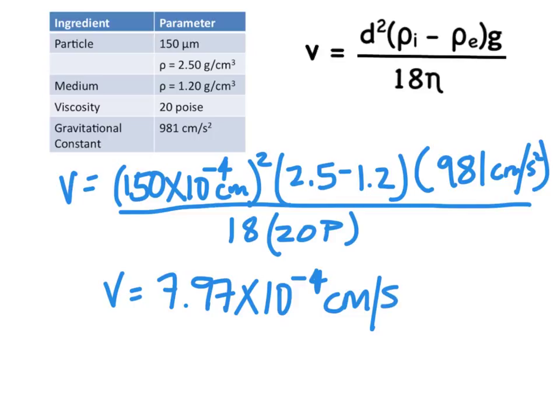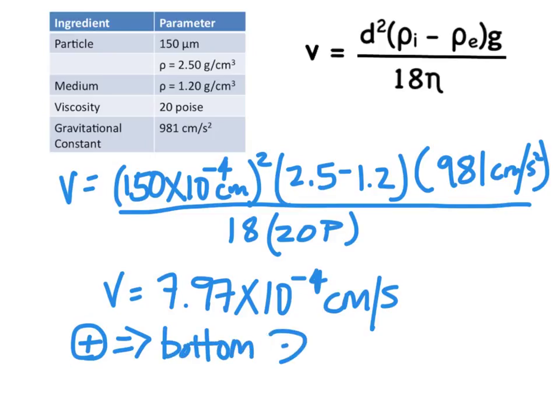A positive sign on the rate means the particle will settle to the bottom. A negative rate means the particle — and this is usually with emulsions — can rise to the top. So with an emulsion, a positive rate would be downward creaming, and a negative rate would be upward creaming.